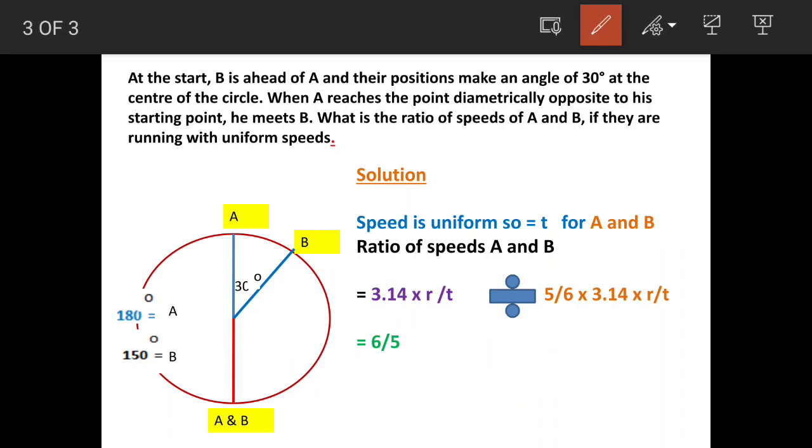So now we have got both the distances and time is T. Distance of A divided by T and distance of B divided by T, this will give us ratio as 6 is to 5, which is our answer. Thank you, thanks for watching.